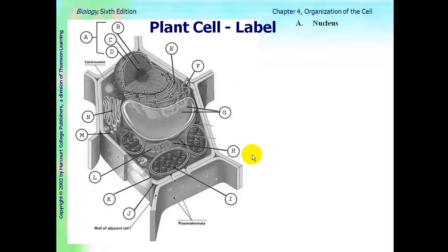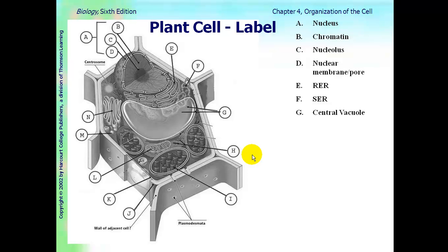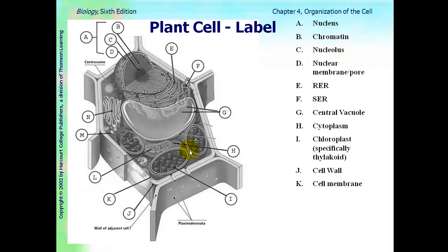Here's a plant cell. A is the nucleus, B is chromatin, C is nucleolus, D is nuclear membrane or a pore, E is RER, F is SER — notice the difference in structure and that they're connected. G is the central vacuole — on a plant cell, you want to say the word 'central.' H is cytoplasm, I is chloroplast — if you're pointing to one of those discs, that's a thylakoid. J is cell wall, K is cell membrane, L is mitochondria, M is ribosome, and N is Golgi body. And that completes the podcast.